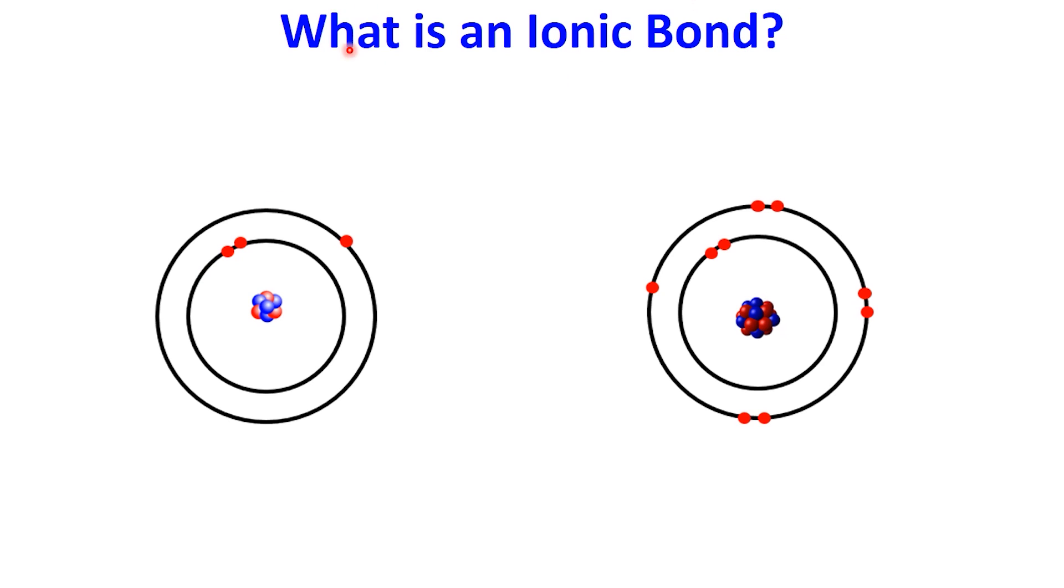Let's talk about ionic bonds. An ionic bond is a type of chemical bond that forms when one atom transfers one or more electrons to another atom.